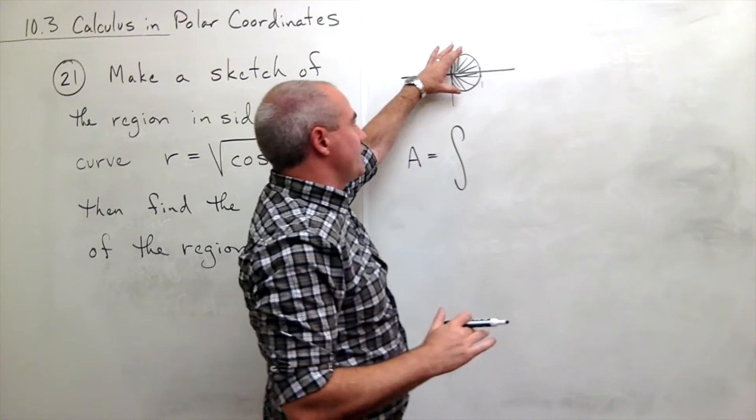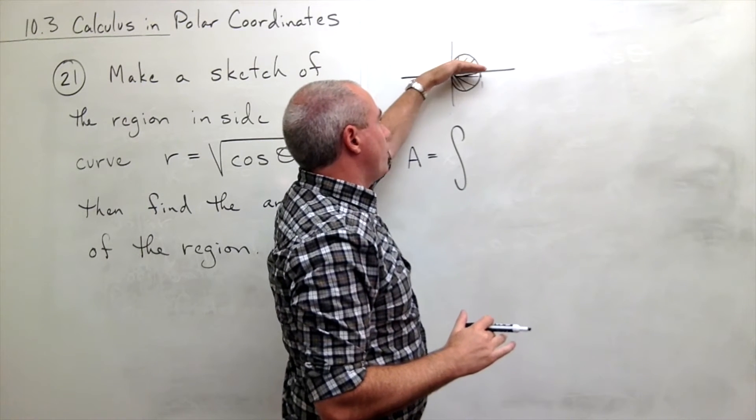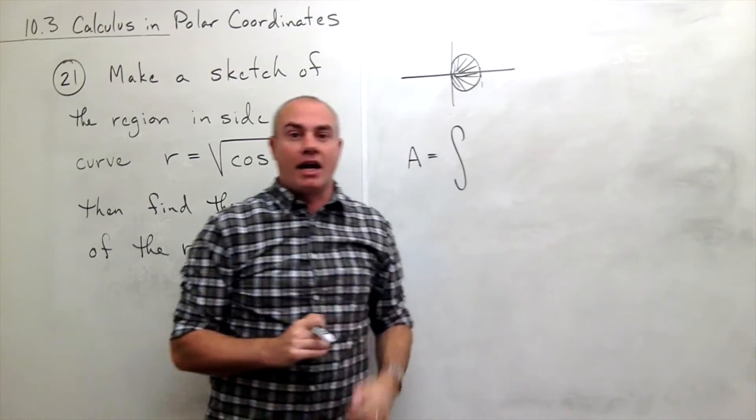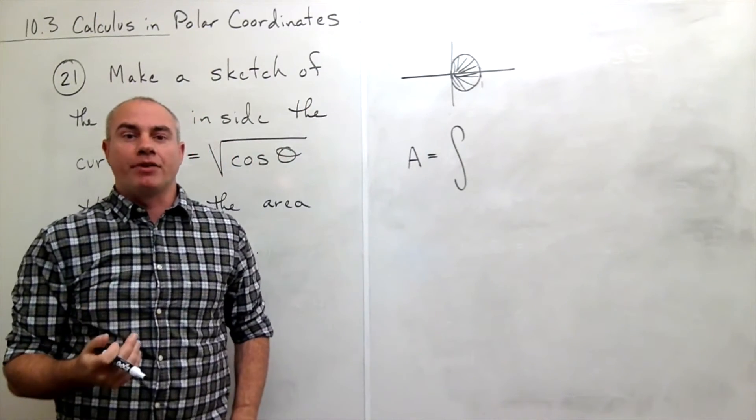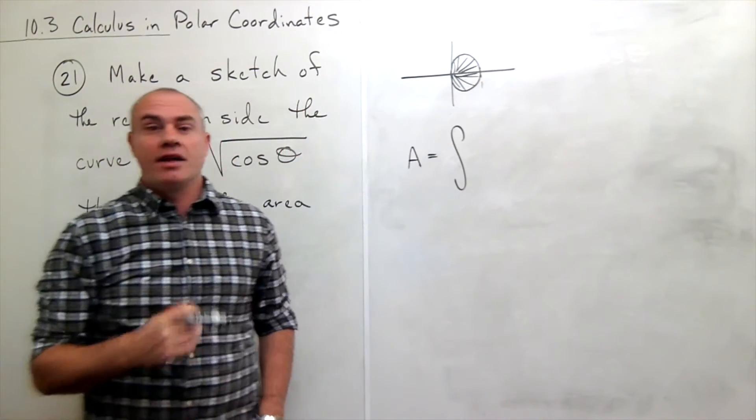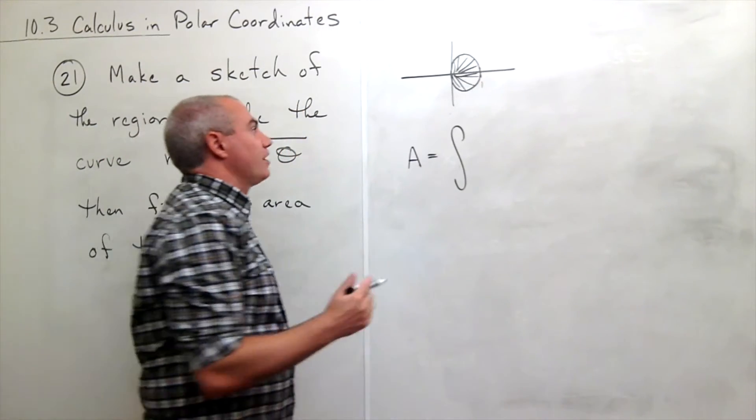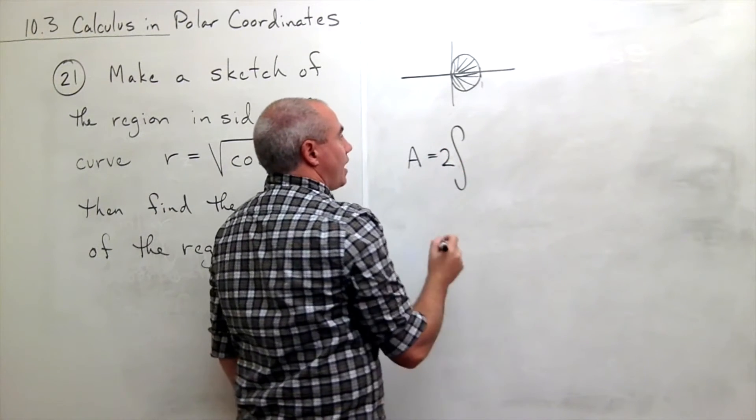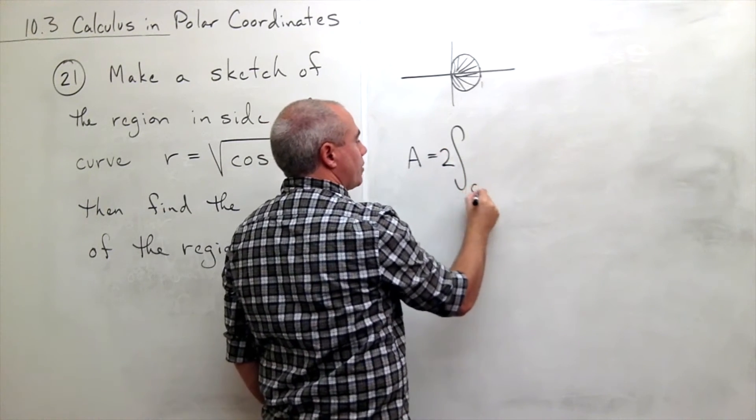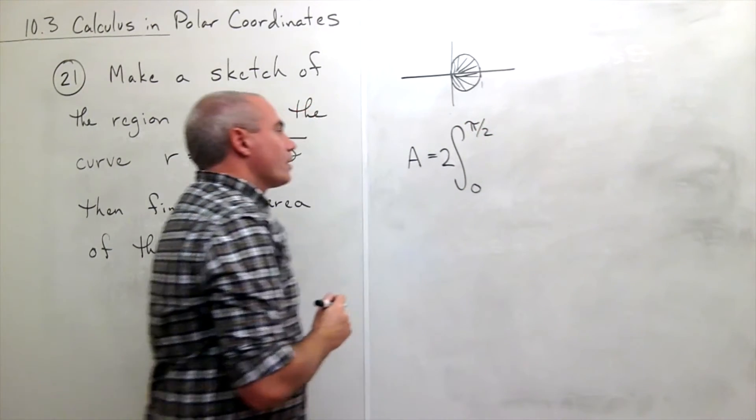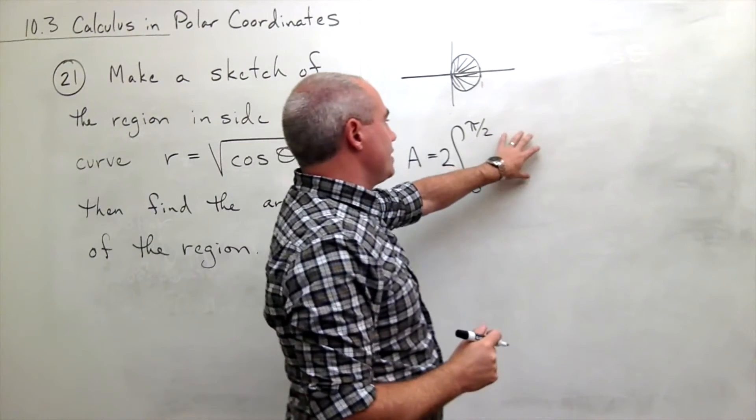Alright, that would trace out the entire shape. But I also know that this is symmetric, and so I could just look at the area of the top half and then double that. Anytime that I can get zero involved as one of my limits of integration, I kind of want to take advantage of that. So what I'm going to do is say that this is two times the integral from zero to pi over two.